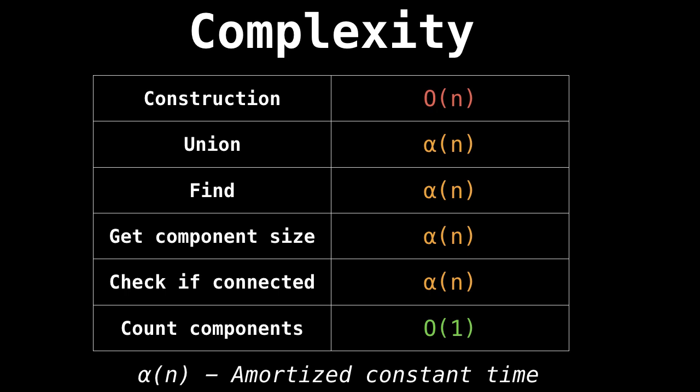So what kind of complexity can we attribute to the union find? The complexity is excellent. Its construction is linear time, which isn't actually bad at all. Then the union, find, get component, and check if connected operations all happen in what's called amortized constant time — so almost constant time, although not quite constant time. And finally, count components — we can determine how many components, or in our magnet example how many different groups of magnets we have — and we can do that in constant time, which is really, really great.